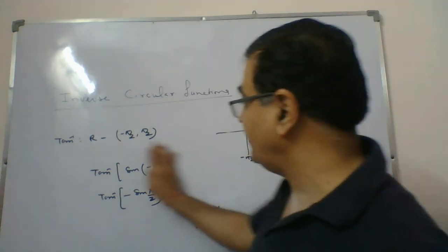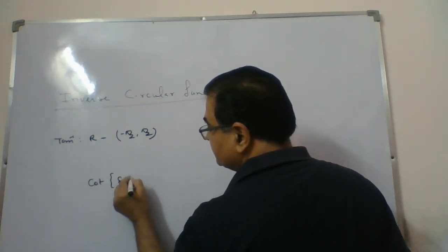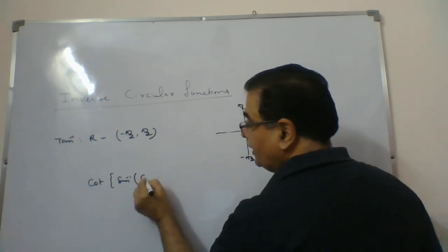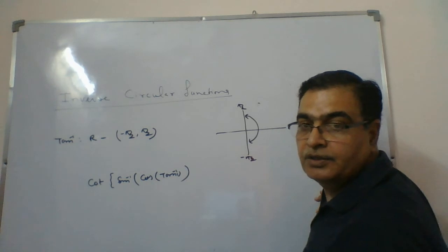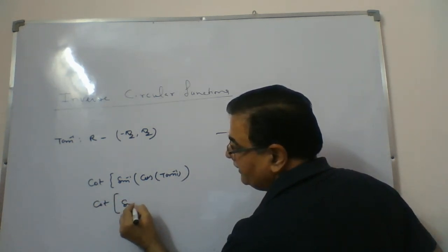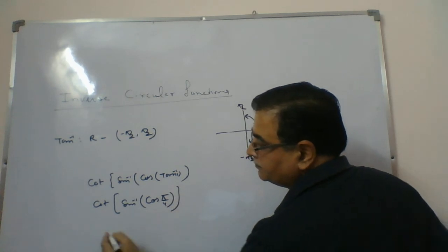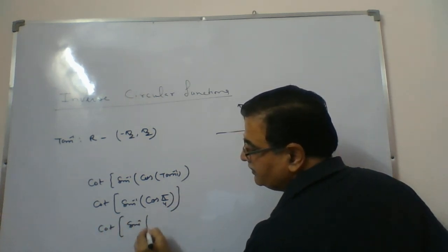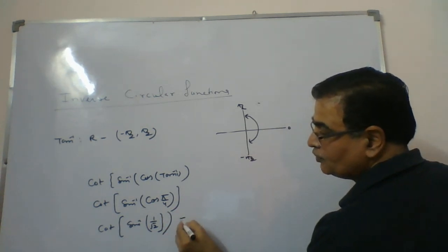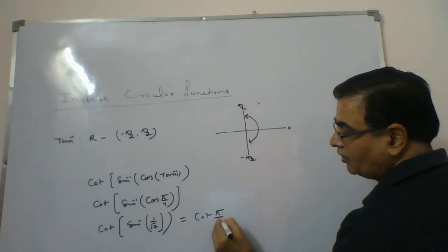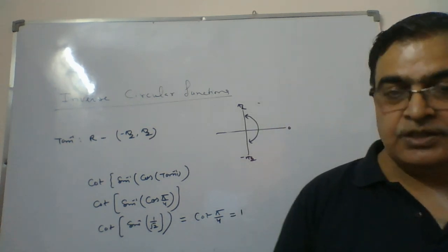One more question: find the principal value of cot(sin inverse(cos(tan inverse 1))). Tan inverse 1 equals pi by 4, so the expression becomes cot(sin inverse(cos(pi by 4))). We can continue evaluating from there step by step. Next time we will continue with this type of question.